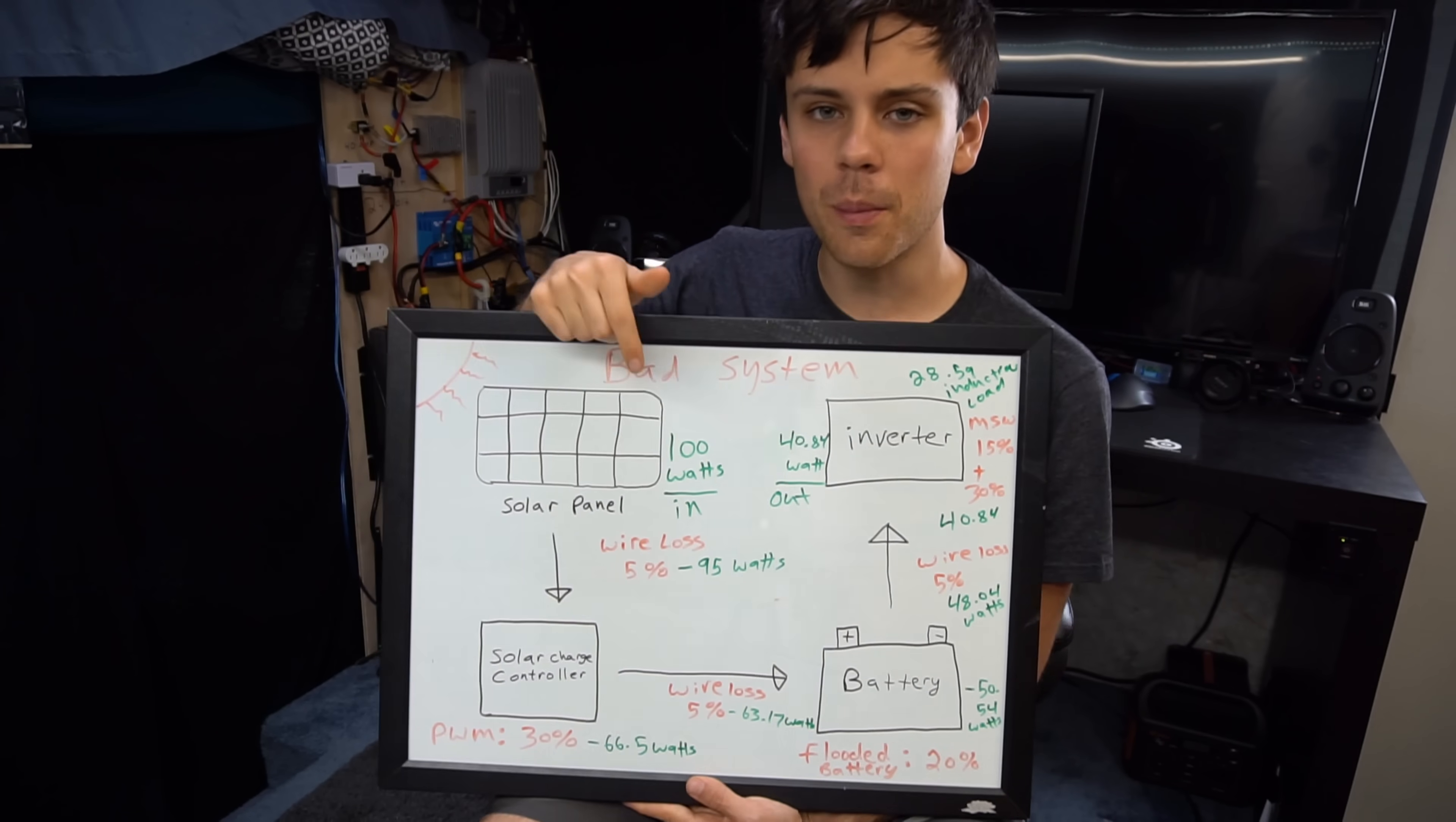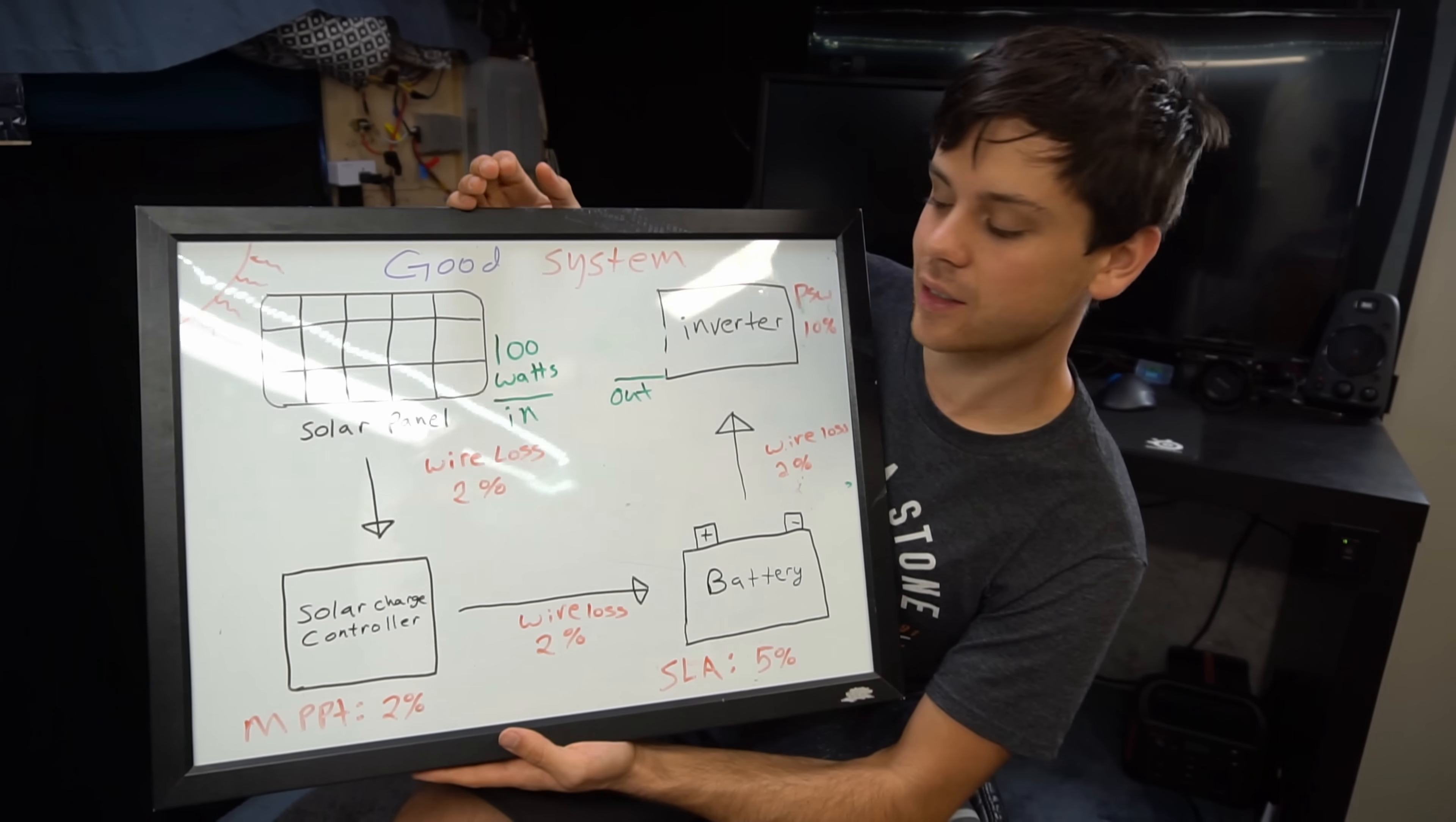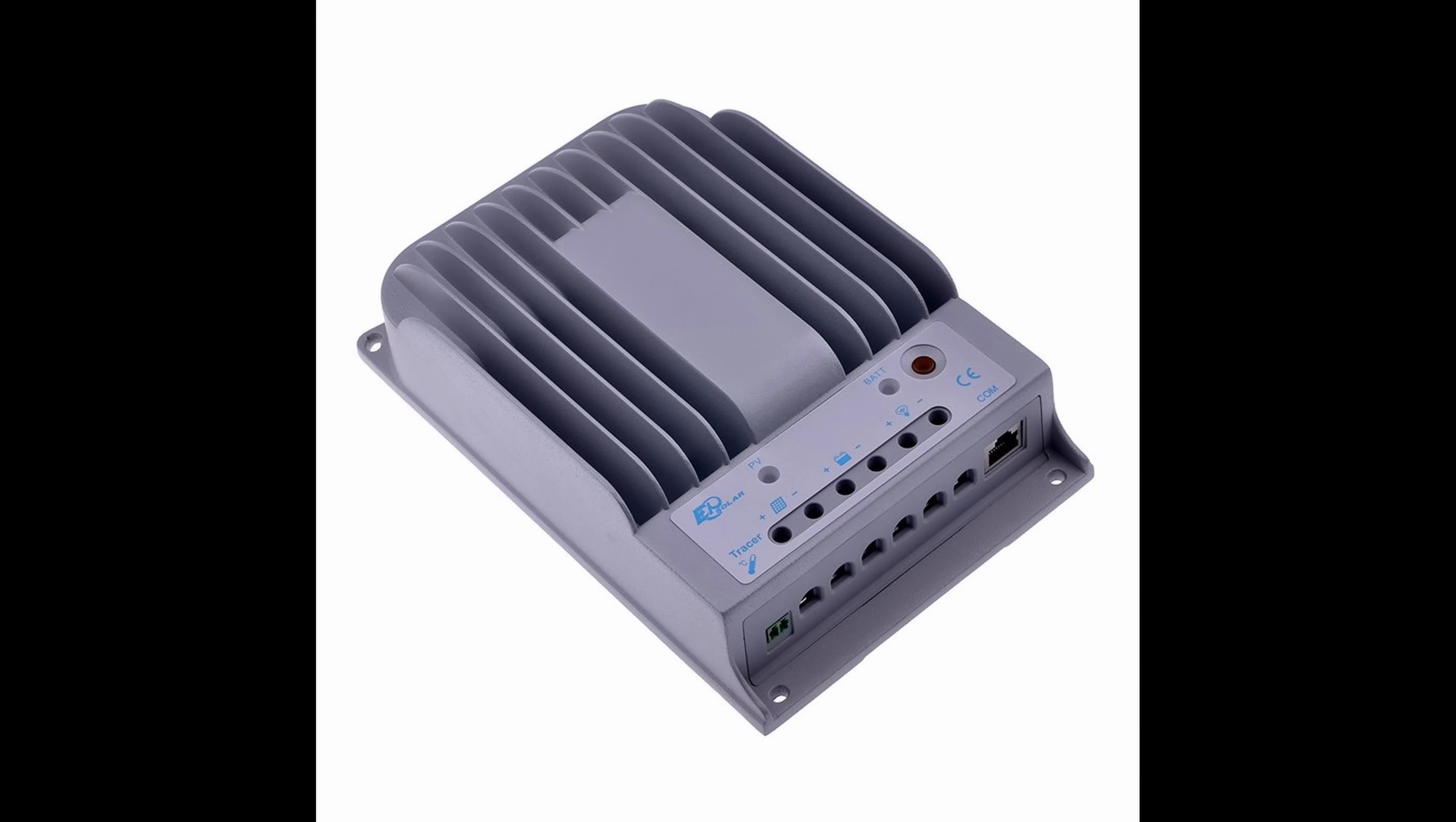So now that we know a badly designed system we are going to design a good system and I'm going to show you step by step how different the losses are. This is a well-designed system so we are going to have a wire loss of only 2 percent because we're using the right gauge wire. Then we're going to use an MPPT solar charge controller so instead of 30 percent loss you only have a 2 percent loss.